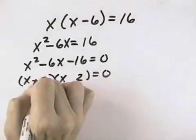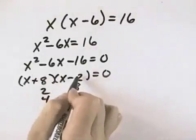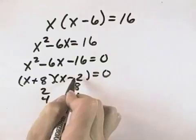Let's try plus 8 and minus 2. That gives me a positive 8X on the inside and a negative 2X on the outside. That's a positive 6X when I add them.